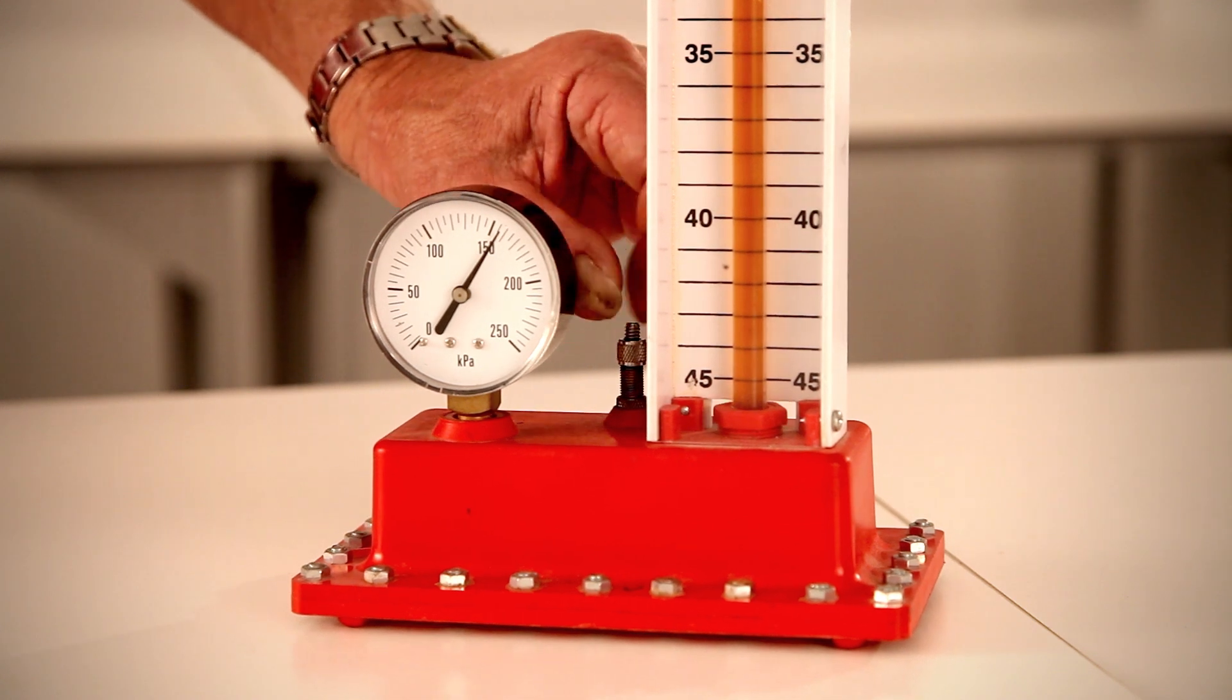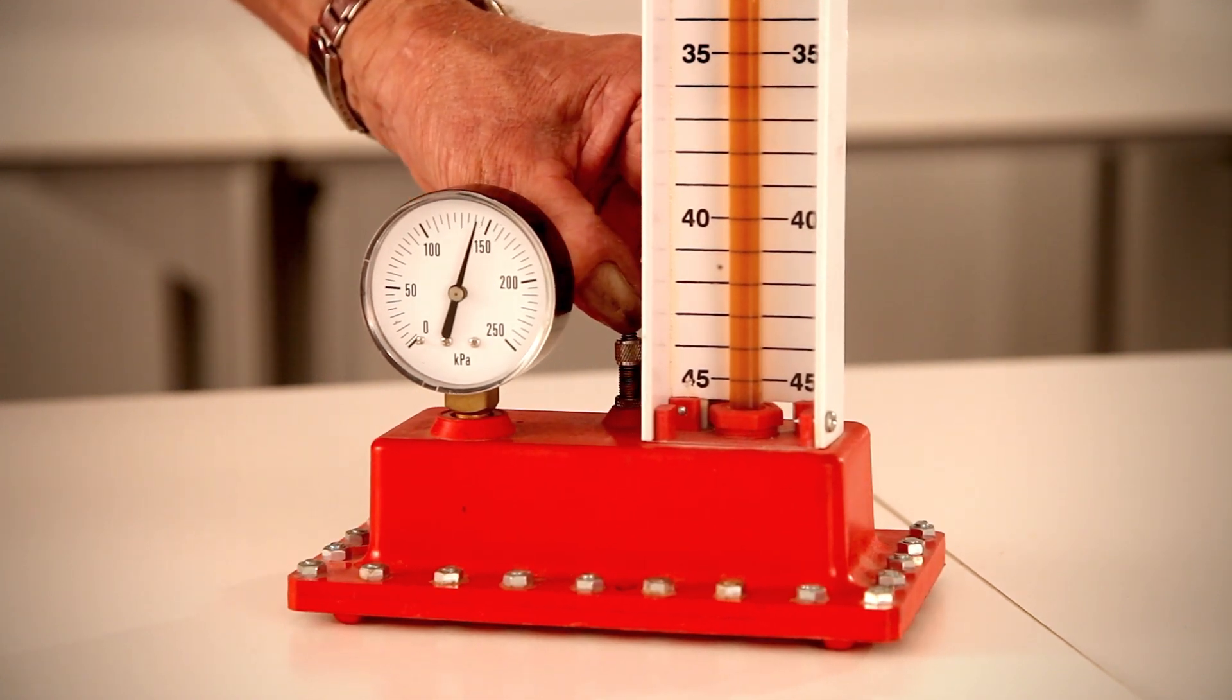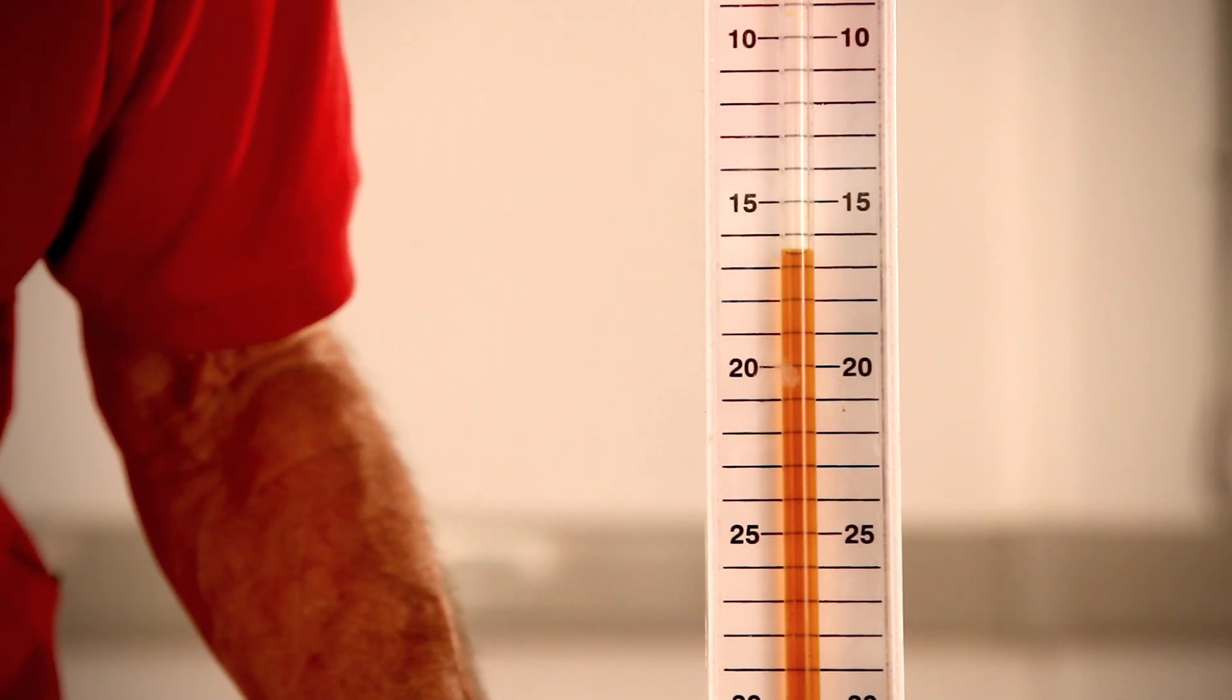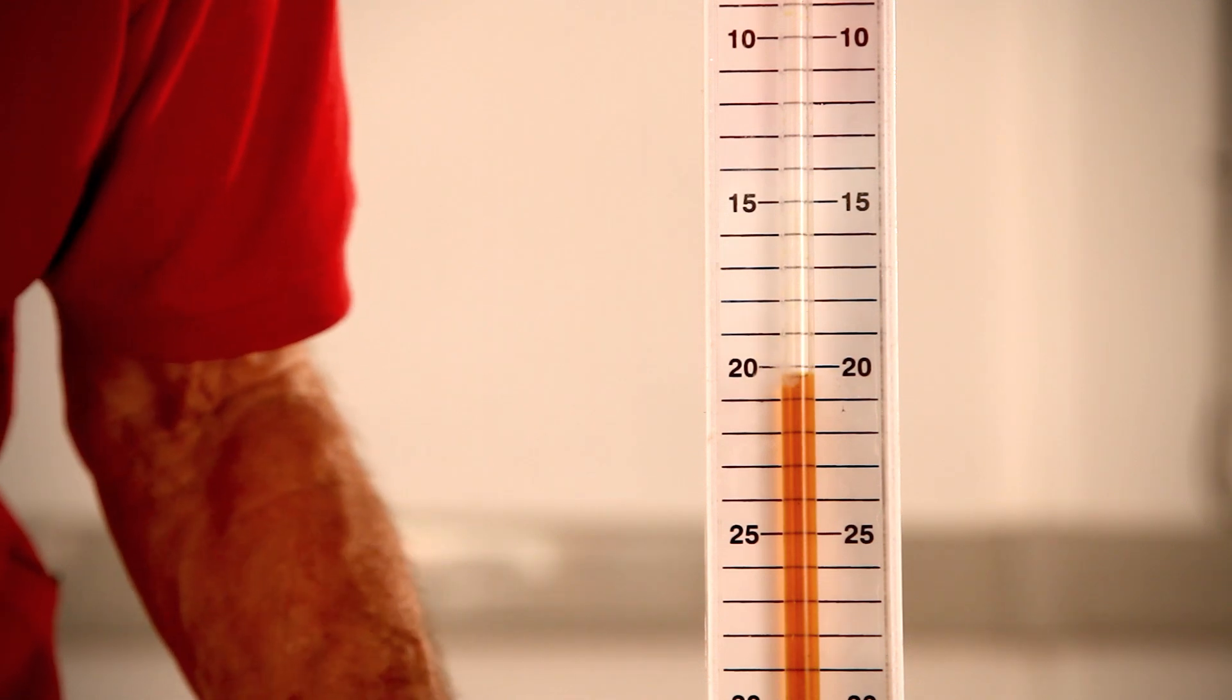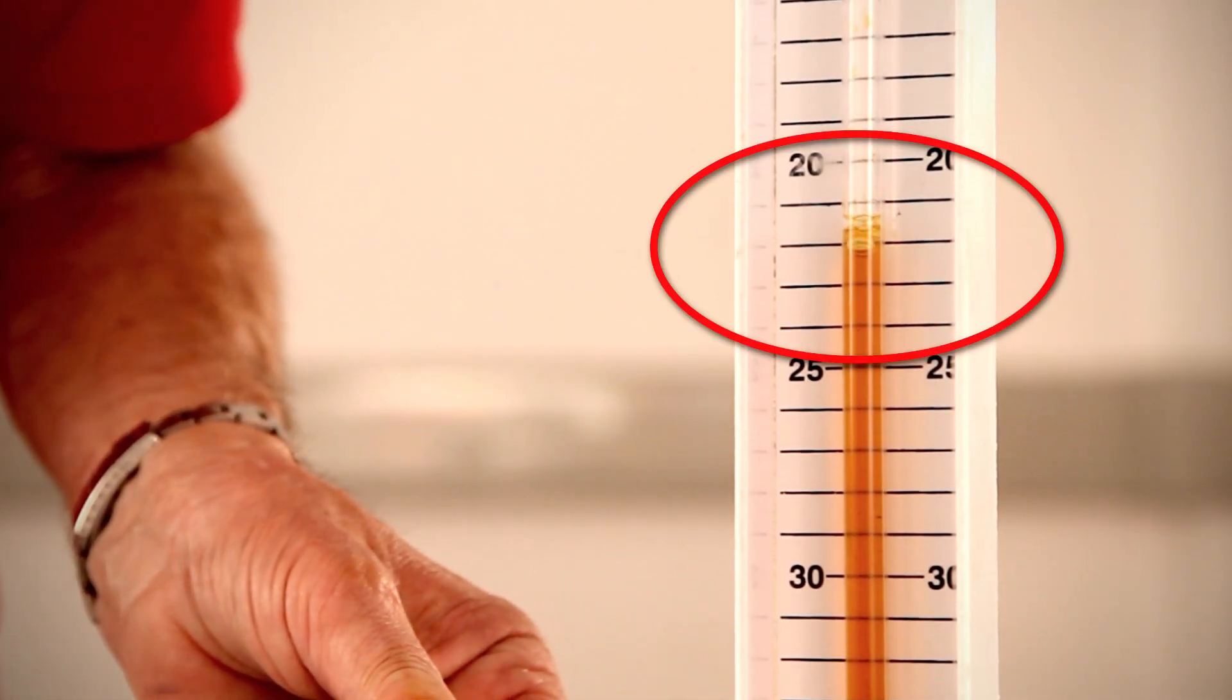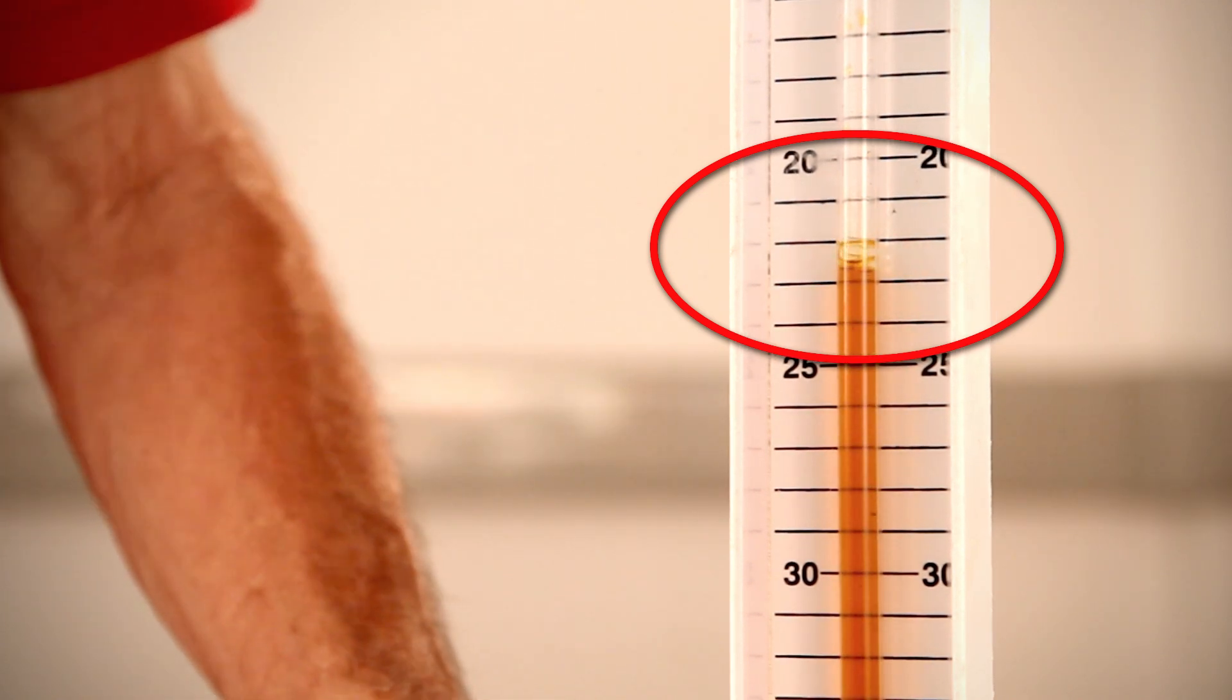A valve at the base of the tube can be opened to reduce the pressure on the air. A new set of readings can be taken. With repeated reduction of pressure, the volume will increase and more readings can be taken. Care must be taken to allow the oil in the tube to settle before taking a reading.